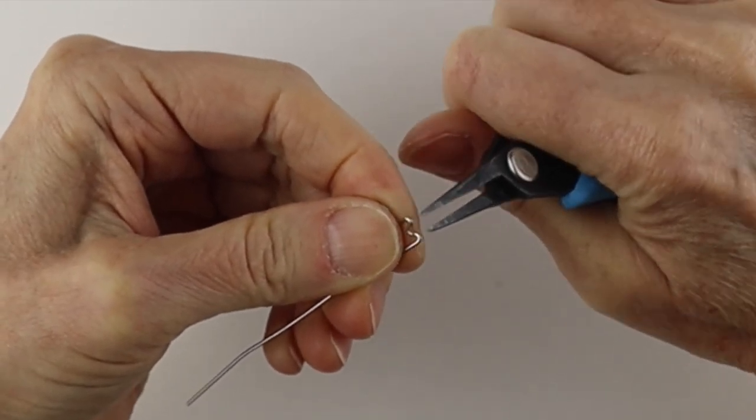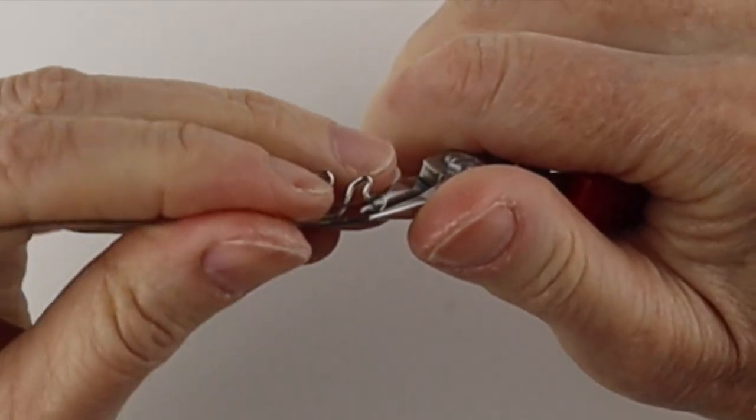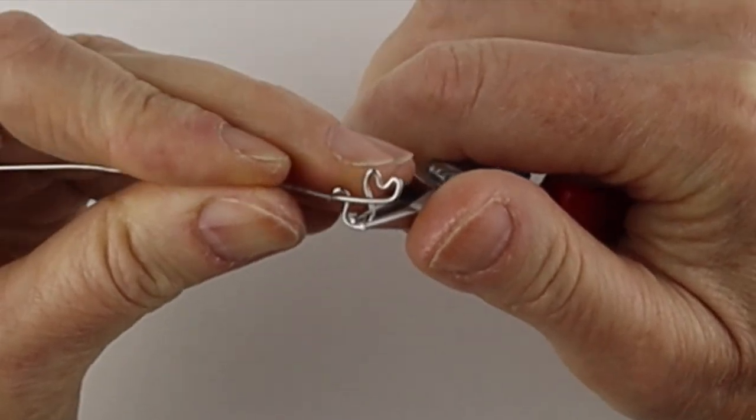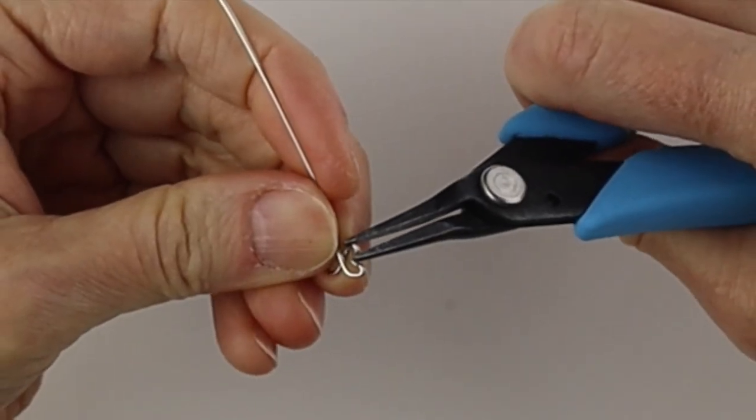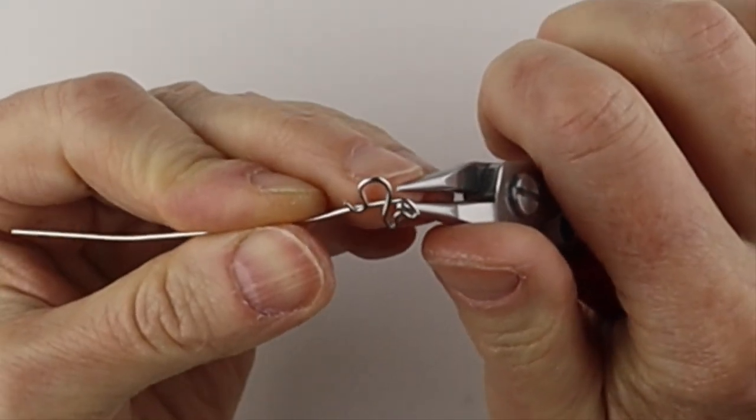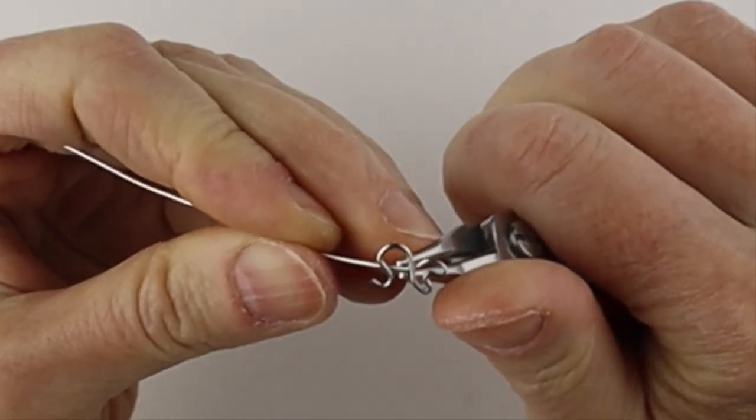Pinch these in to make them sharper. And then we're going to bring this one around. Pull this in a bit. Push it in even more if you need to. And then I'm actually going to bend this at a bit of an angle. Curve it out.